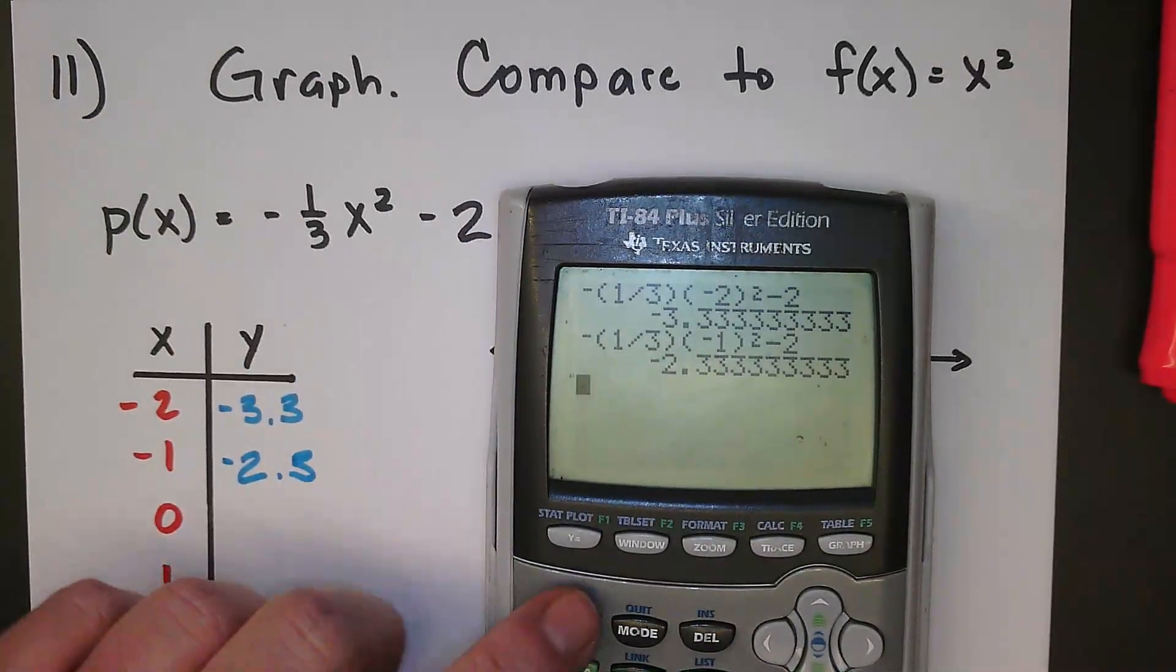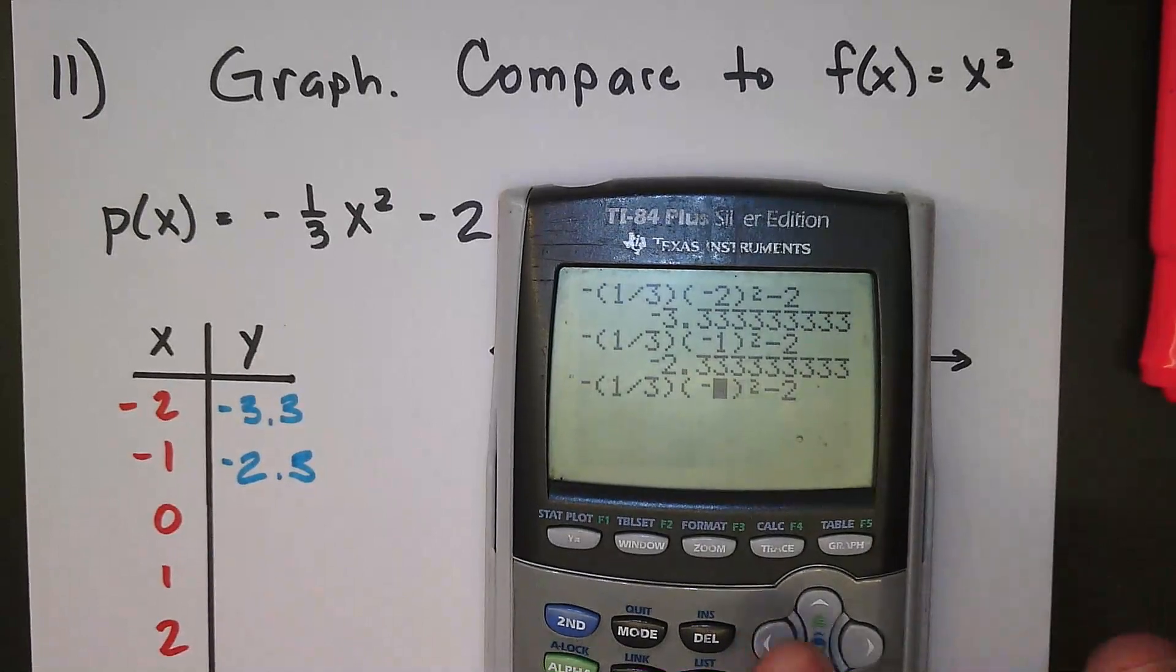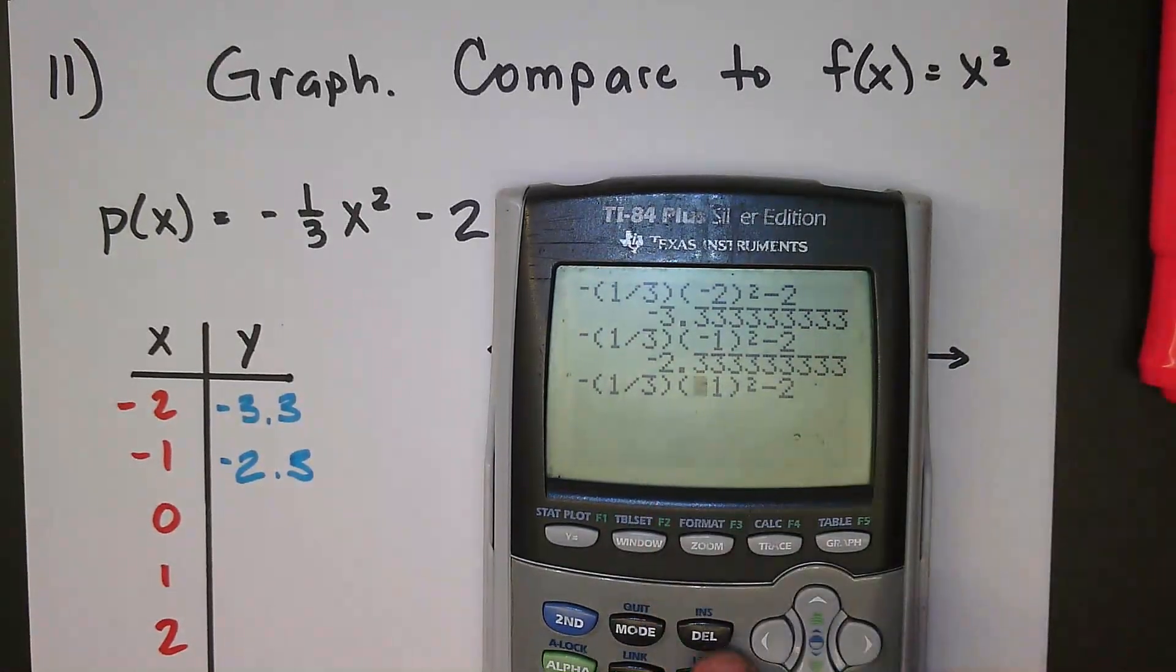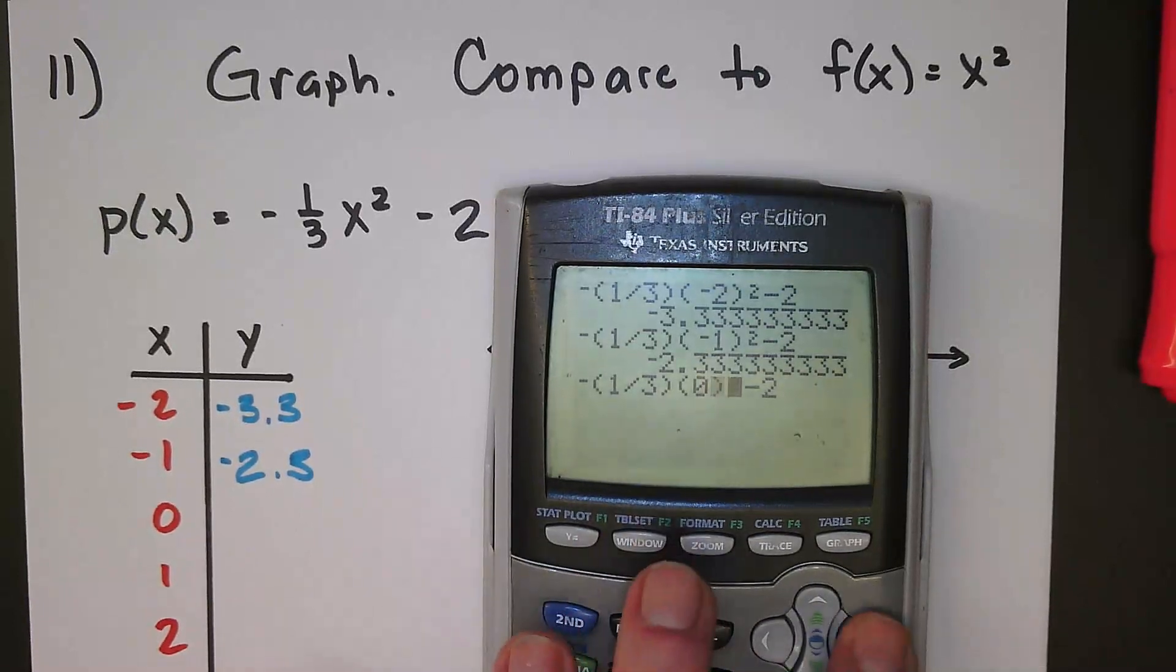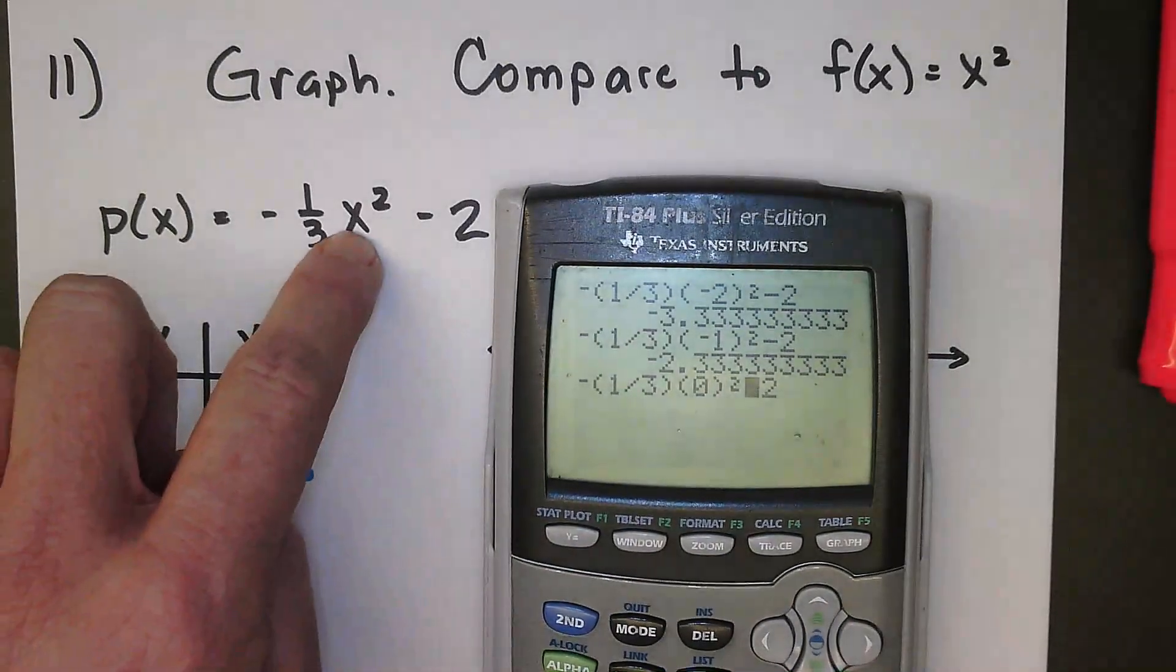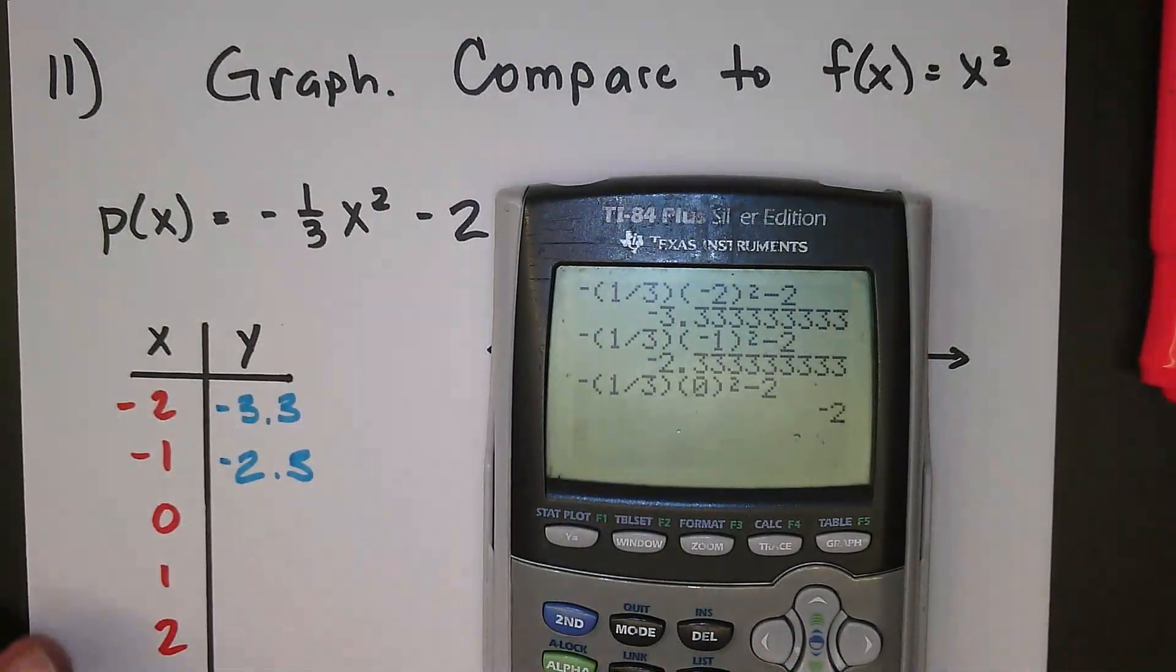I'm now going to change it to 0, so I'll pull it back up. I do need to use the delete key to get rid of that negative. The del just gets rid of a single thing, and now I can over-type and make that a 0. So I'm putting 0 into my function with the calculator and I get negative 2.